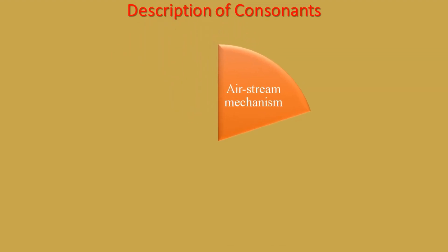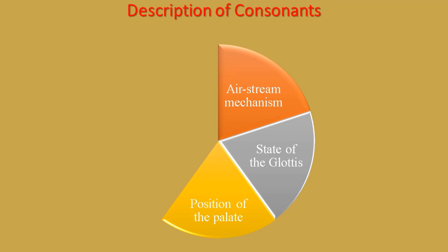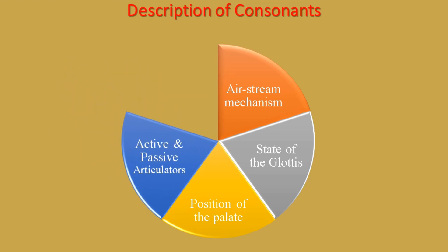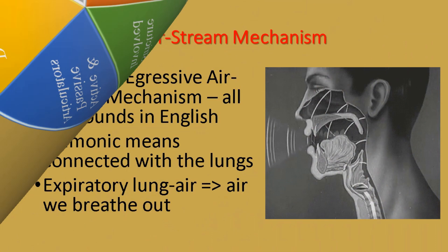Now, let us describe consonants. The consonants are described based on six criteria. These six factors are necessary to be dealt with in order to understand the sub-classification of consonants. The first one is Airstream mechanism. Next one is State of the Glottis. Thirdly, the position of the soft palate. Then, active and passive articulators. Lastly, we have the structure involved.